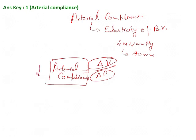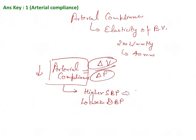Whenever arterial compliance decreases, there will be an increase in load on the heart. Reduction in arterial compliance will lead to higher systolic blood pressure and lower diastolic blood pressure. This increase generally occurs due to reduced arterial compliance and is responsible for a very steep increase in systolic blood pressure, and generally occurs at ages above 50 years. There will also be a consistent lowering of diastolic blood pressure.